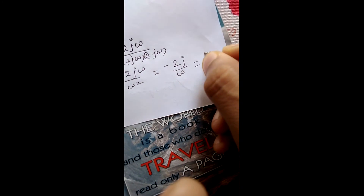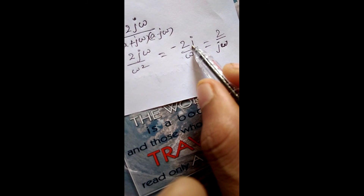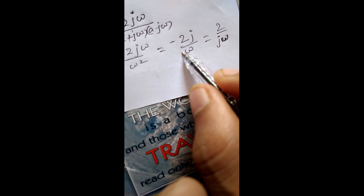This can be written as minus 2j divided by ω, which equals 2 over jω, because if we multiply numerator and denominator by j, j squared equals minus 1, so minus times minus gives plus, and j remains in the denominator. Finally, we get the Fourier transform of the signum function equal to 2 over jω. Thank you.